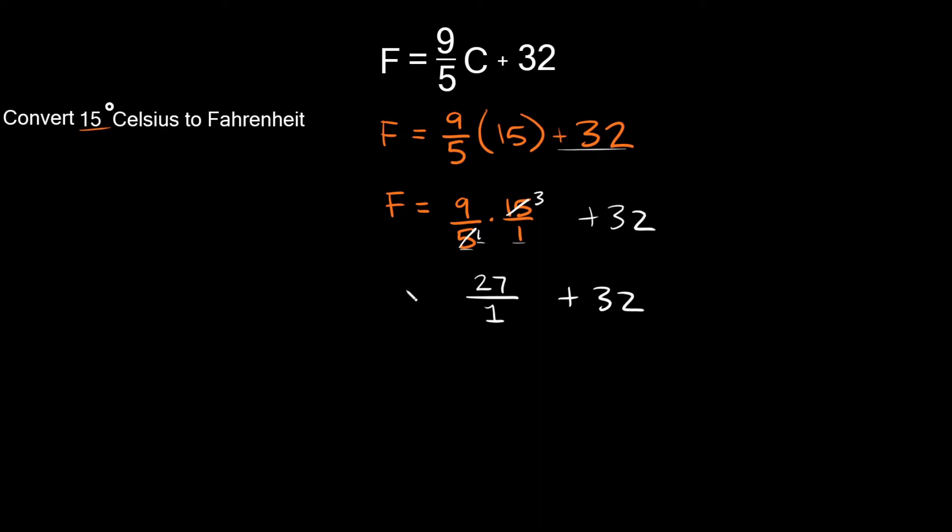So Fahrenheit equals 27 over 1 plus 32. Simplifying one last time, 27 over 1 is just 27. Then we add 32 to that. 27 plus 32 equals 59.